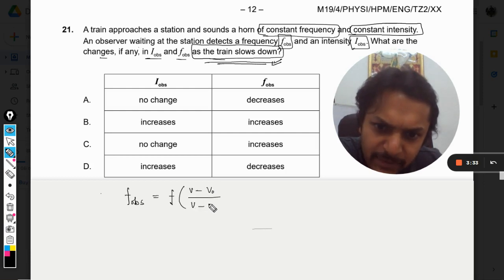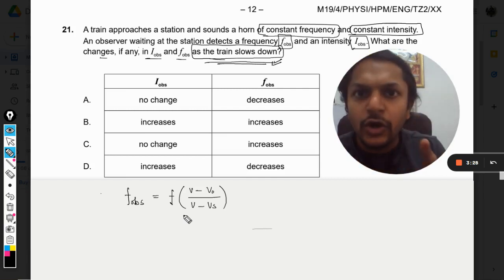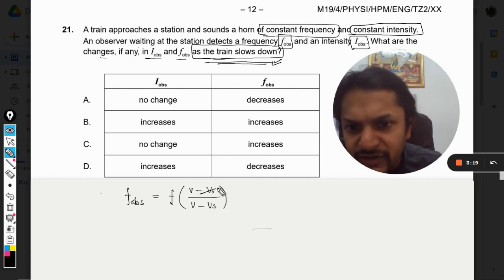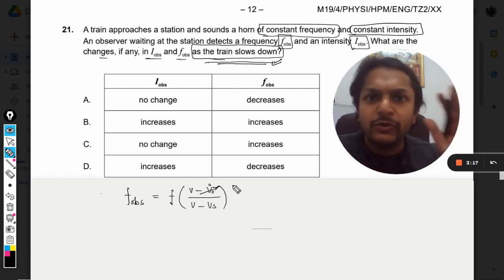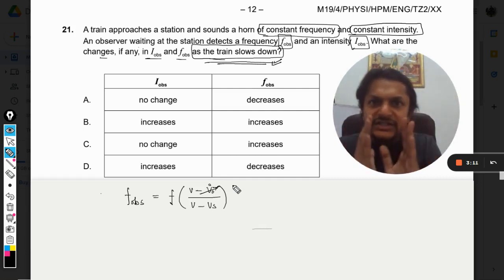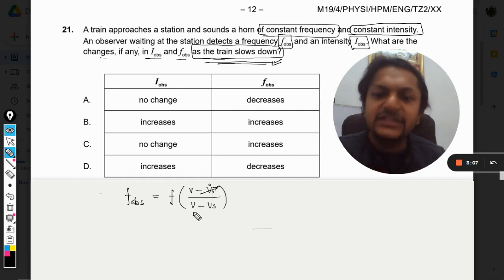Divided by velocity of sound minus velocity of source. So this is a general formula you can find in any book or on Google anywhere. Now our observer is at rest, so there is no question about the observer—he is waiting on the railway station—but the train is moving towards the observer.